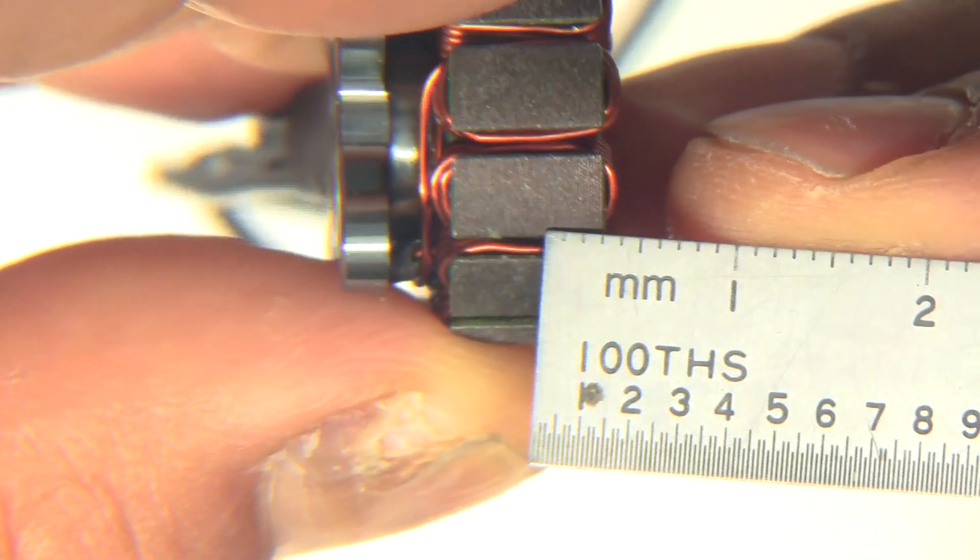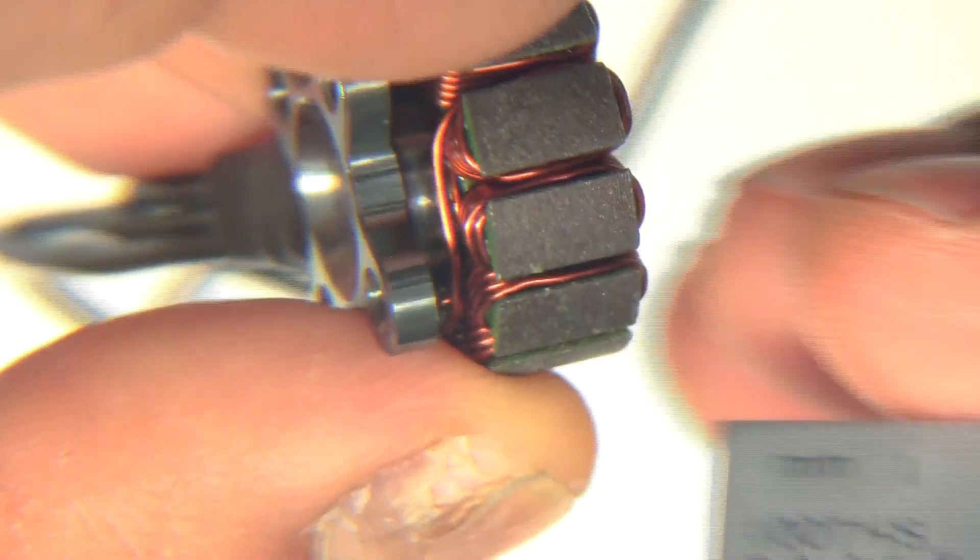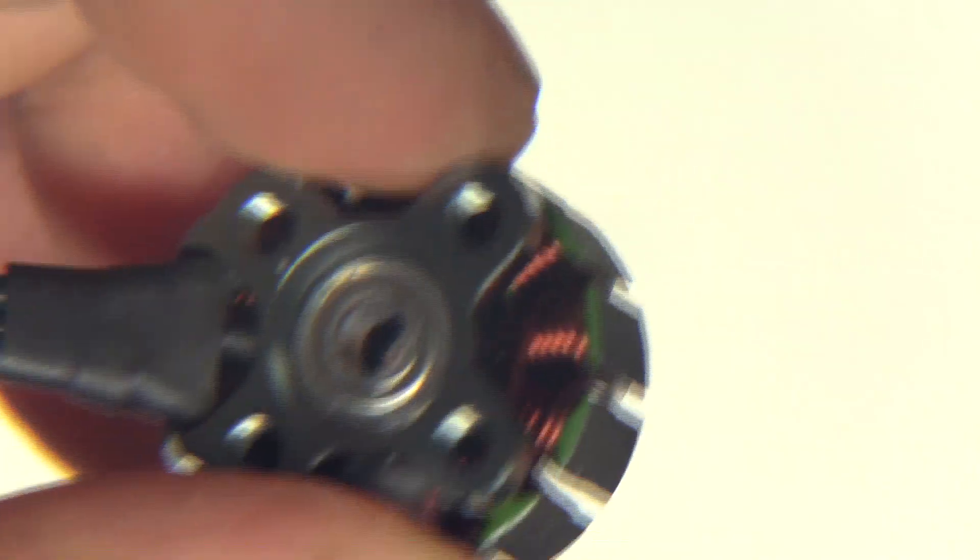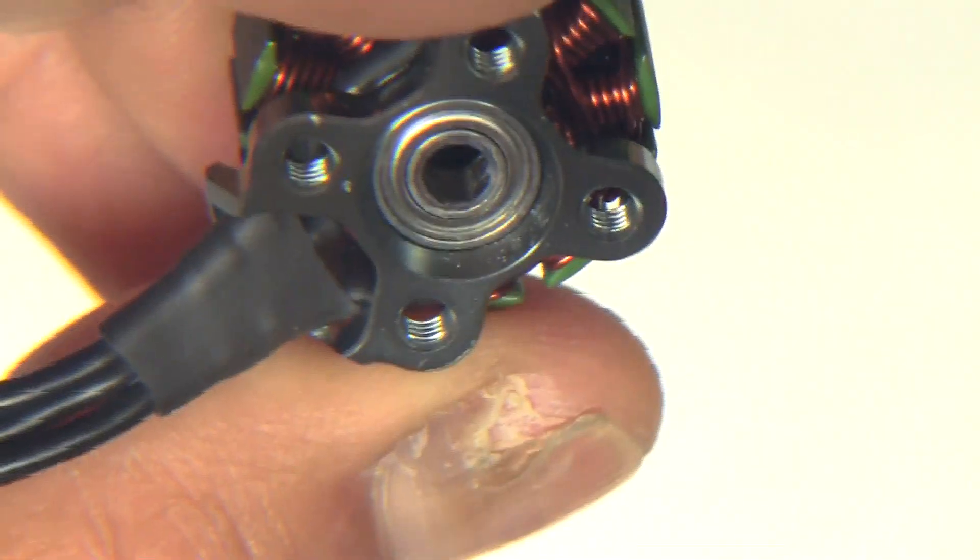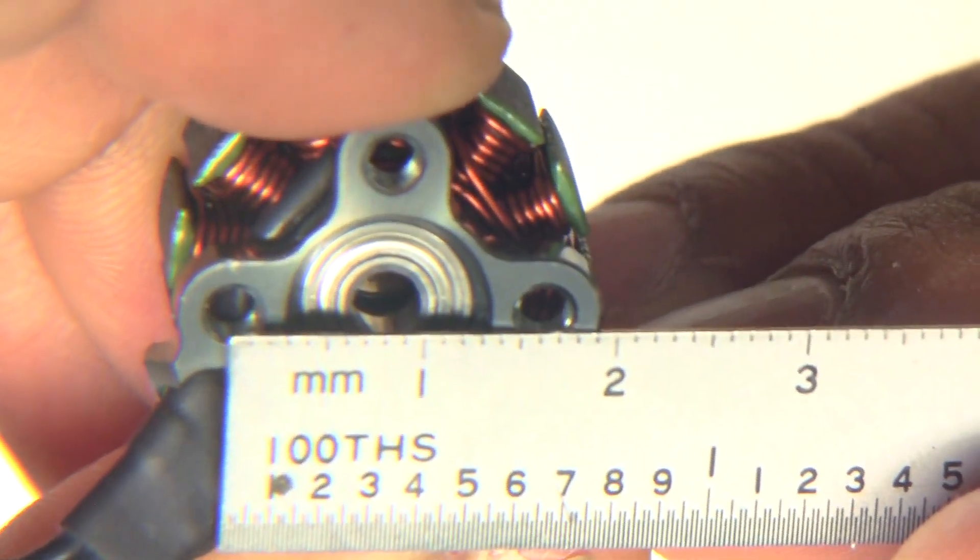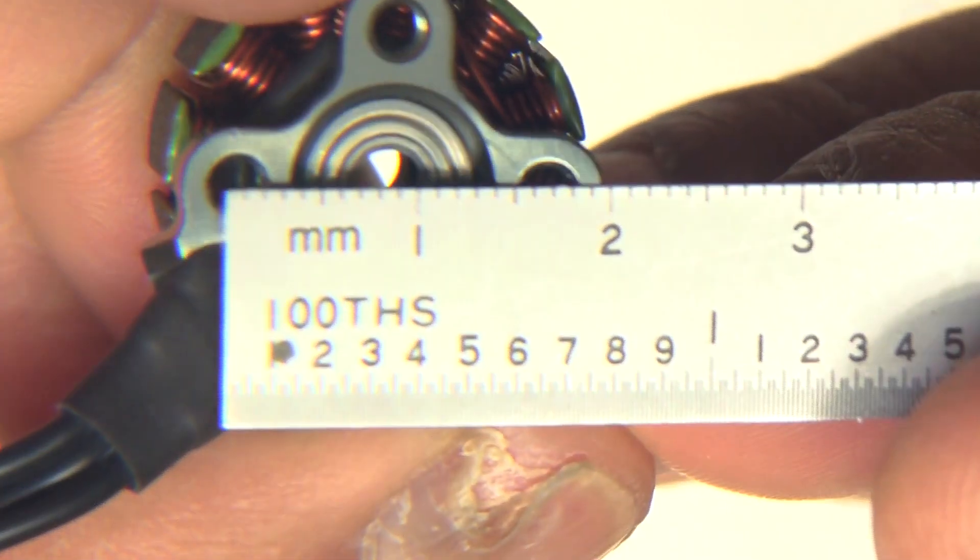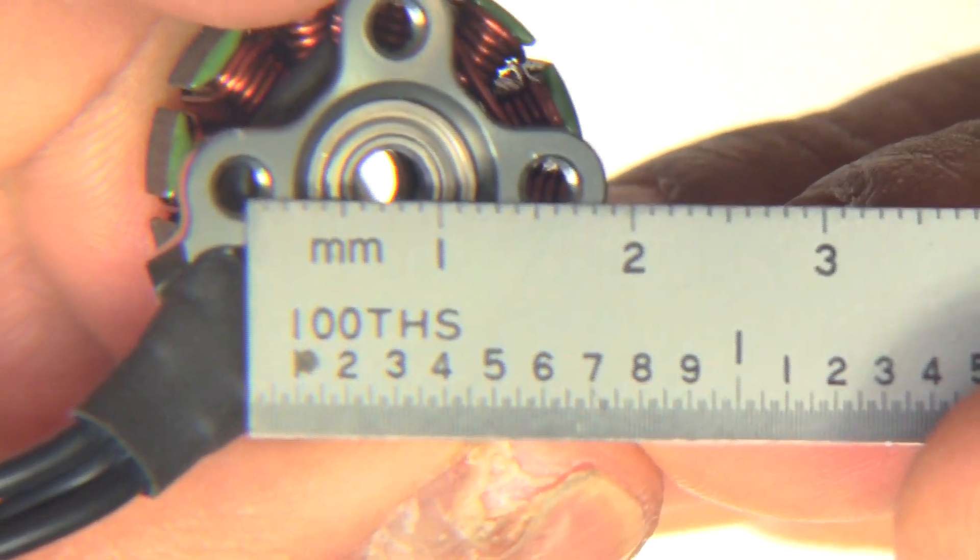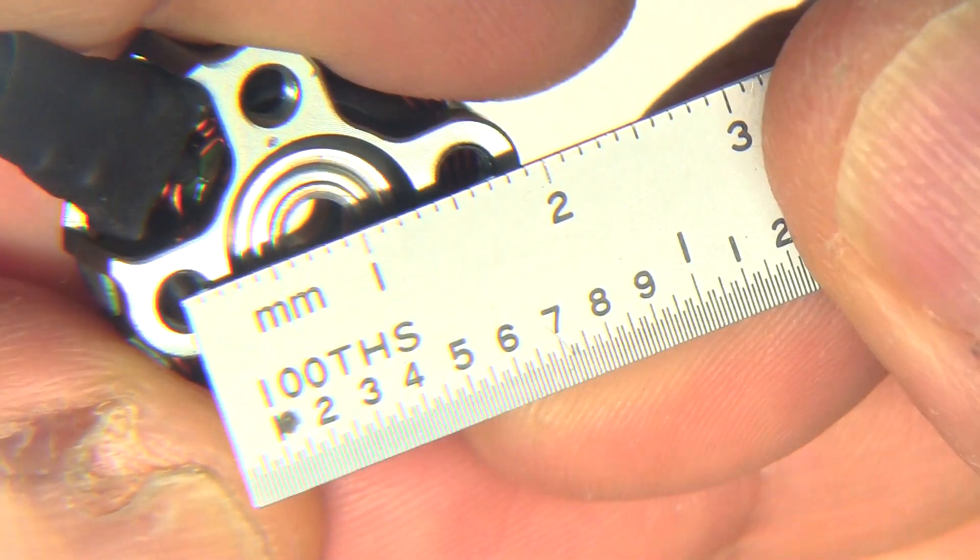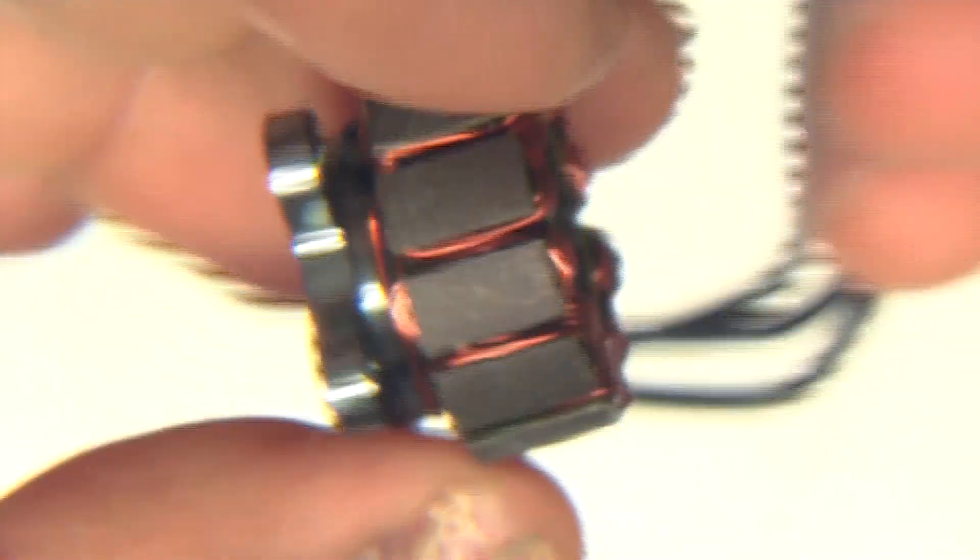And pretty thin laminations for sure. Those are 0.2 millimeters at least. So there you see the base is pretty much standard. Looks like, I think it's 16 by 16. Let's see, 16 by 16. So pretty nice looking motor overall.